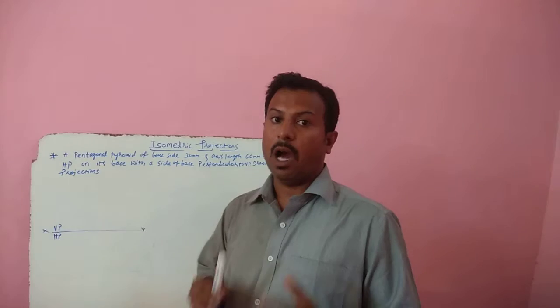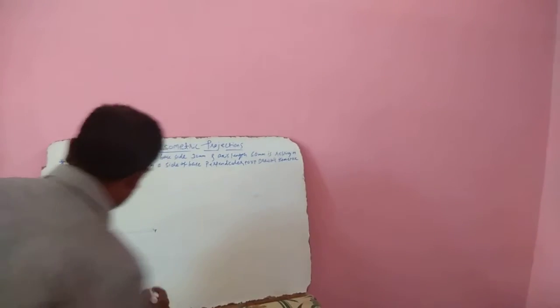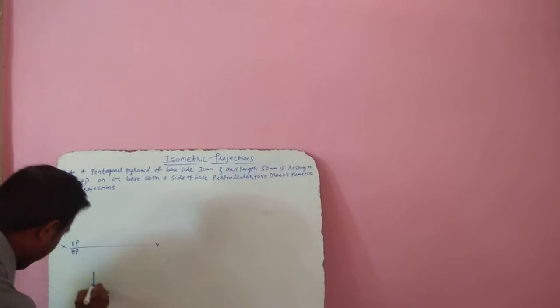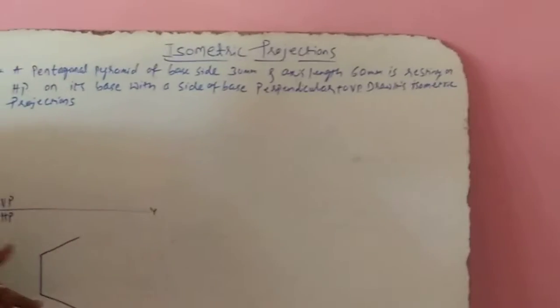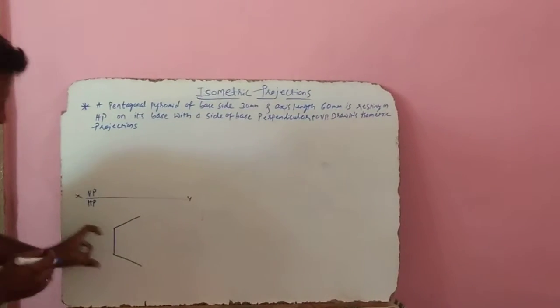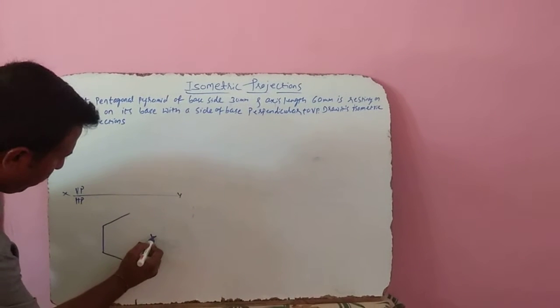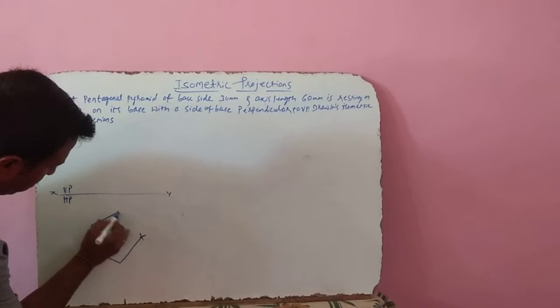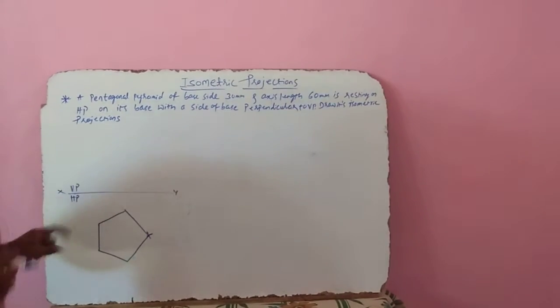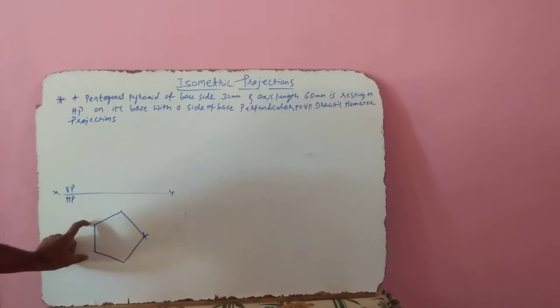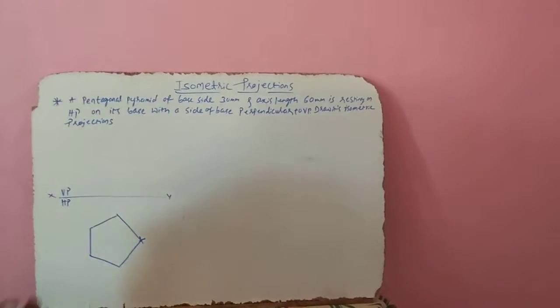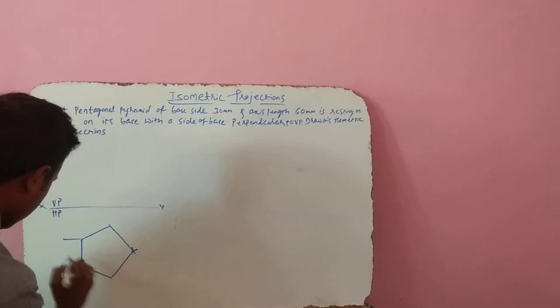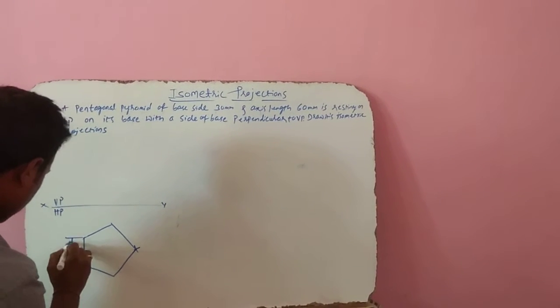For this problem, first we need to construct the orthographic projection. I am explaining that now. First you draw a vertical line of 30mm. Now measure 108 degrees on either side of this line. By help of compass, you get the fifth point. We need to place the edge this way because the side of the base is perpendicular to VP. Now I am just going to give annotations.